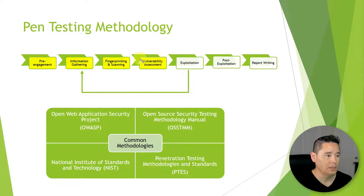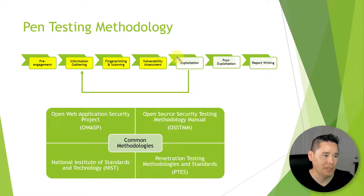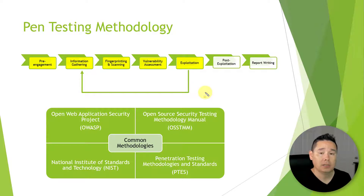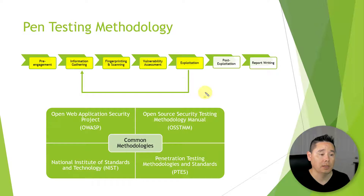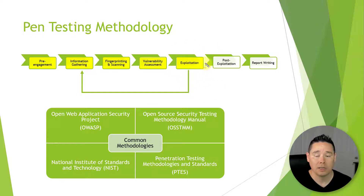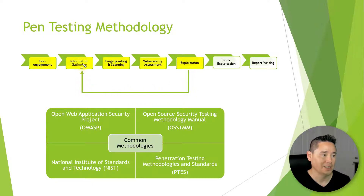Once we've finished finding vulnerabilities that we think we can potentially exploit, we move on to exploitation. Just like vulnerability assessments, this can be either manual or automated. Some websites will give you code that you can modify to manually try to exploit systems, or you can use frameworks — one of the most popular being the Metasploit framework, which we'll take a look at in this series. If exploitation is not successful, we start over and go through the cyclical process until we find an exploit that works.